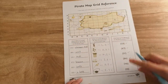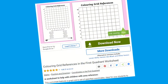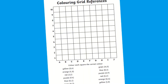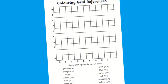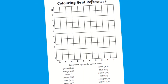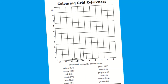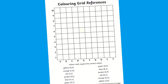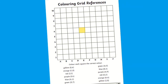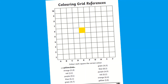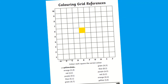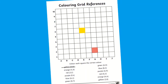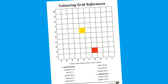Once children have completed this activity, why not get pupils to practise their coordinate reading skills with this colouring grid worksheet? This sheet features a graph and a set of specified coordinates. Children must simply read and plot the coordinates by colouring in the squares — a fun and engaging way for children to revise their learning of plotting on the first quadrant.